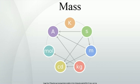In physical science, one may distinguish conceptually between at least seven different aspects of mass, or seven physical notions that involve the concept of mass. Every experiment to date has shown these seven values to be proportional, and in some cases equal, and this proportionality gives rise to the abstract concept of mass.